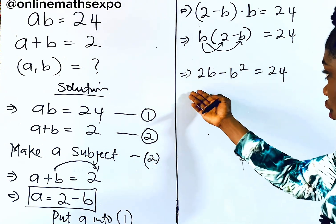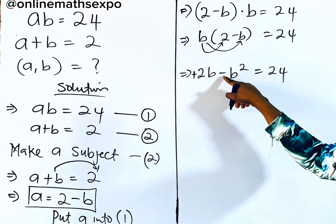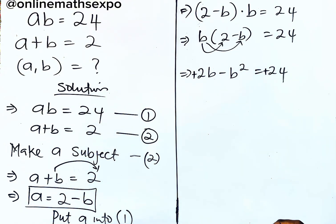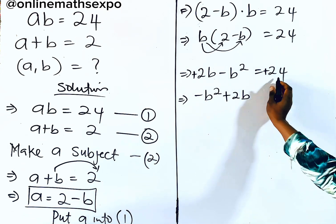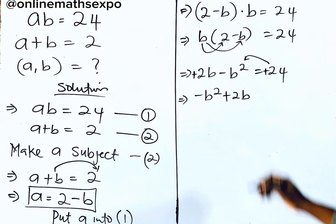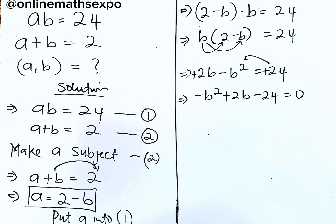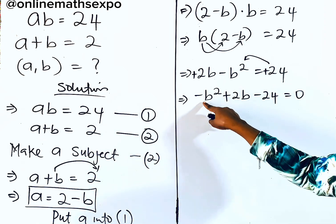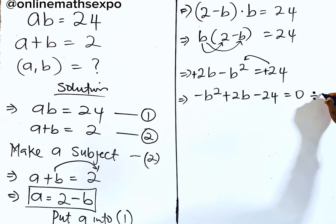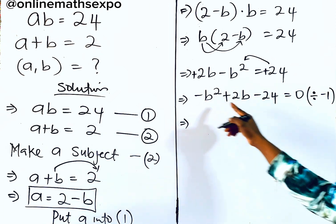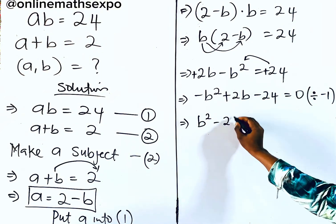Let's rearrange so the highest power comes first. We have −b² + 2b, and bringing 24 to the left by subtracting gives −b² + 2b − 24 = 0. Most students don't like working with equations that begin with a negative sign, so we divide everything by −1. Dividing each term by −1 gives us b² − 2b + 24 = 0.